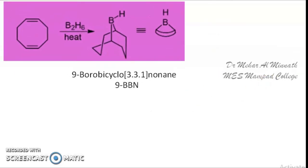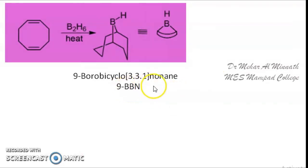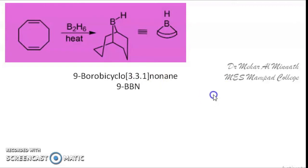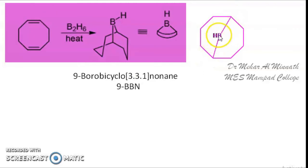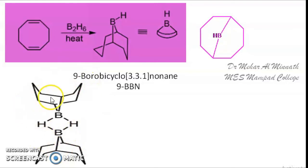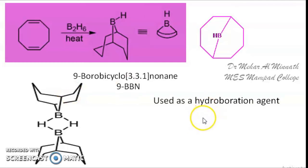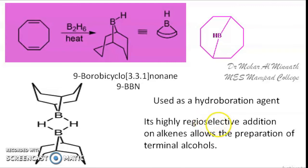Another example of organoborane is the very important reagent 9-BBN, commonly known as 9-BBN or 9-borabicyclo[3.3.1]nonane. It is prepared from cyclooctadiene. As I said earlier, all organoboranes exist as dimers, and 9-BBN exists as a dimer with two ring compounds attached. 9-BBN is a very useful hydroboration agent, particularly used for regioselective addition on alkenes for the preparation of terminal alcohols.